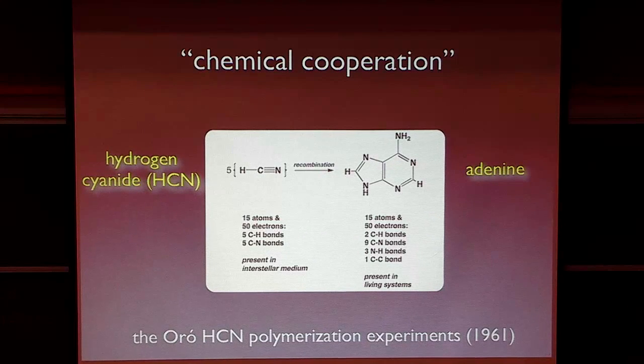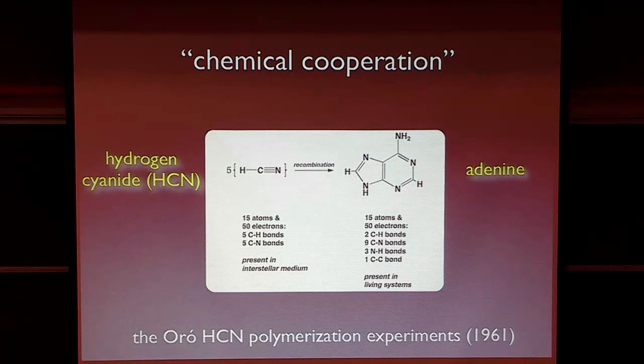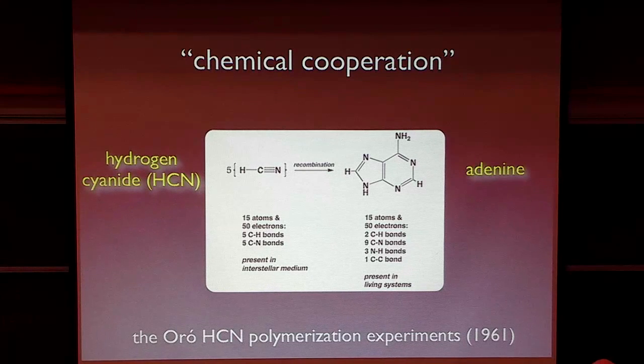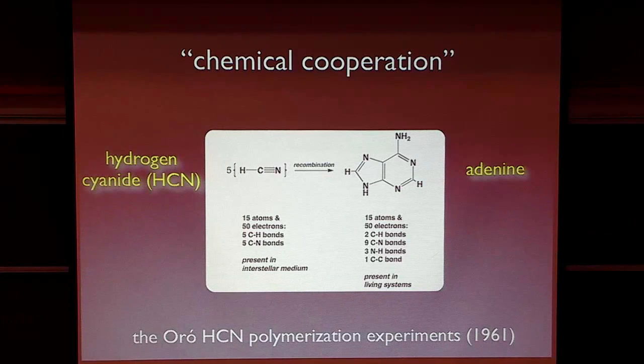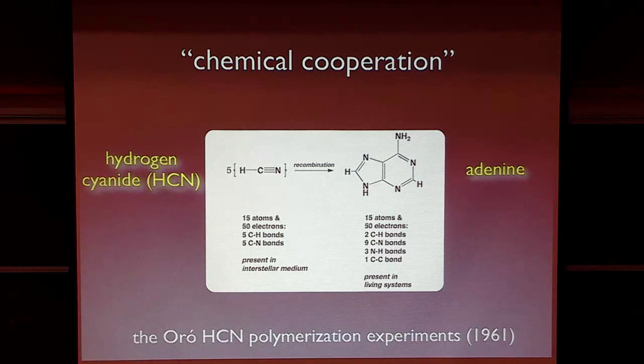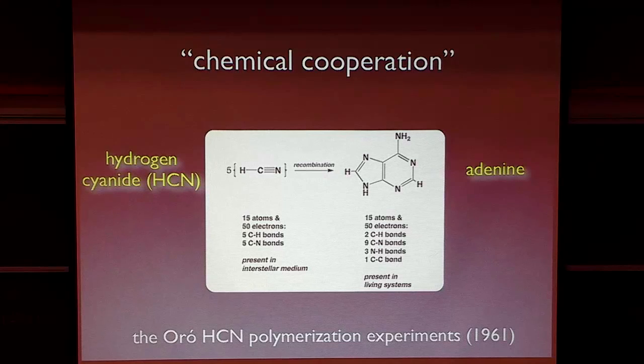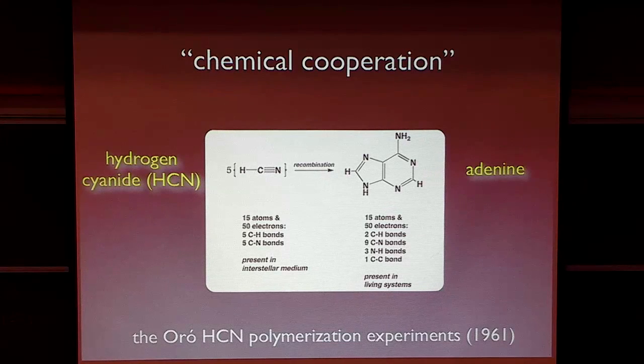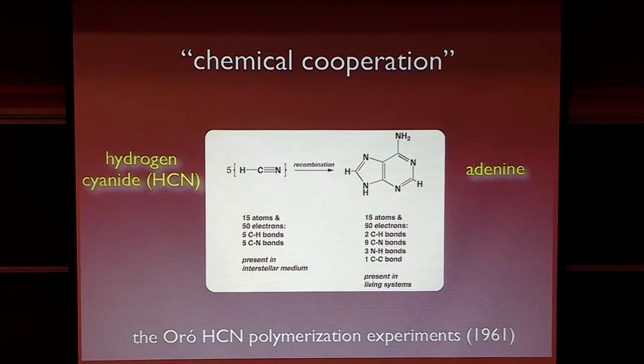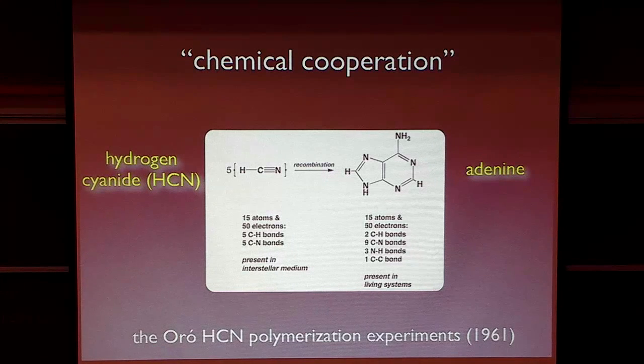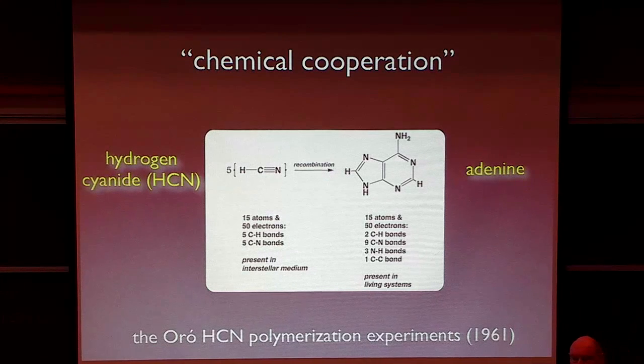And Juan Oro showed in 1961 that you could take hydrogen cyanide and polymerize it, and it makes adenine in a small yield, but it still makes it. And basically in my warped mind, I'm taking five equivalents of hydrogen cyanide, and they are cooperating to make a new molecule. So this is what you might think of as chemical cooperation.